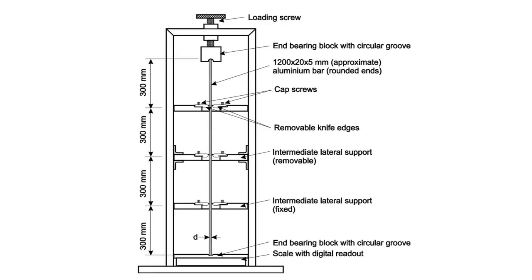A schematic of the test setup is seen in figure 11.1. This shows the aluminum column as pinned at the top and bottom with up to three intermediate supports provided by knife edges. When not needed, the knife edges can be removed using the cap screws, and the middle lateral support can simply be slid out.